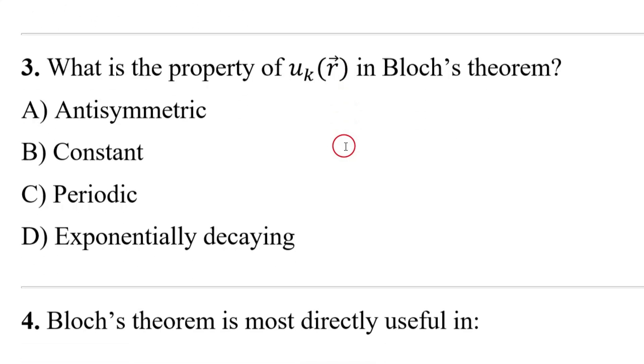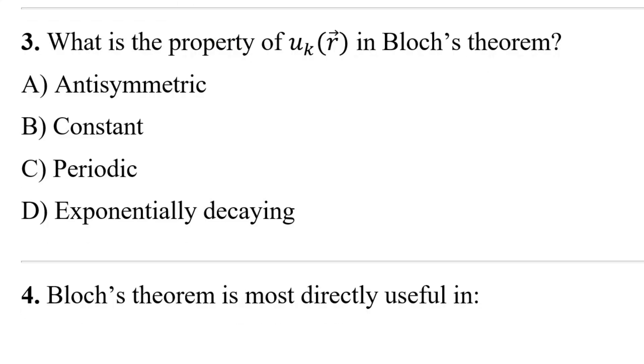Question number three: what is the property of u_k(r) in Bloch's Theorem? Option A antisymmetric, option B constant, option C periodic, option D exponentially decaying.